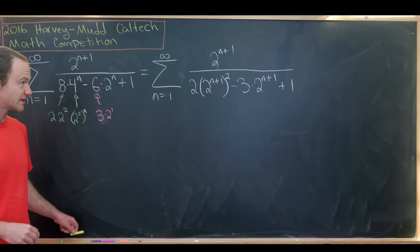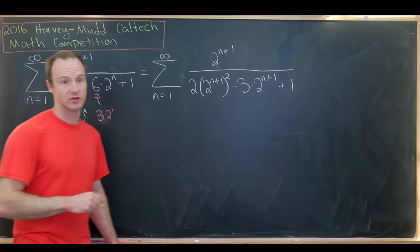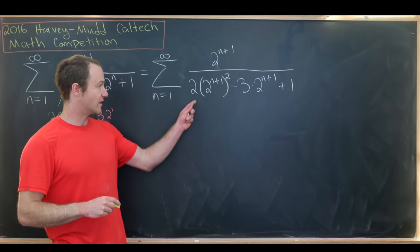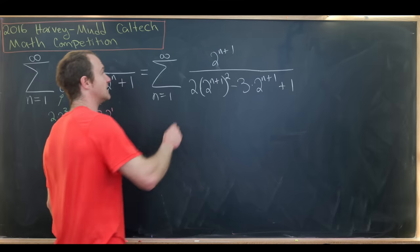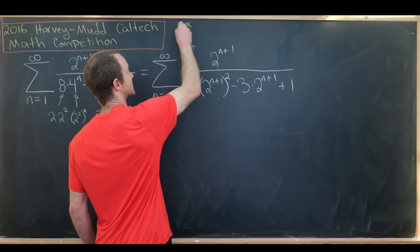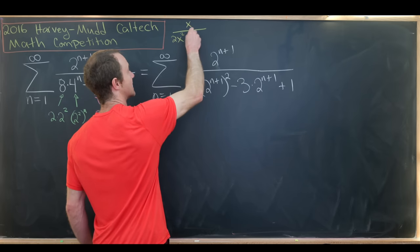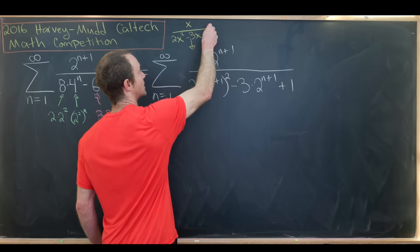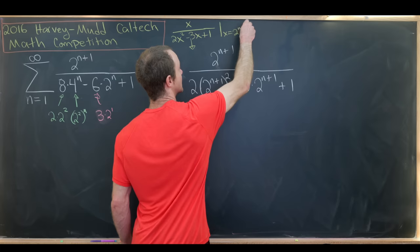So that's really motivating because that looks like some rational function where the variable is 2^(n+1). In fact, this looks like the rational function which is x over 2x^2 minus 3x plus 1, where we set x equal to 2^(n+1).